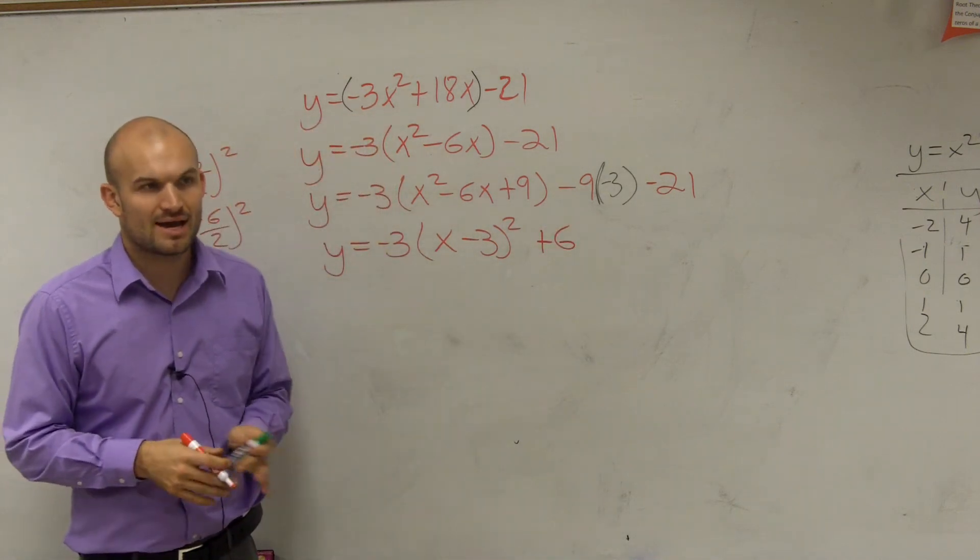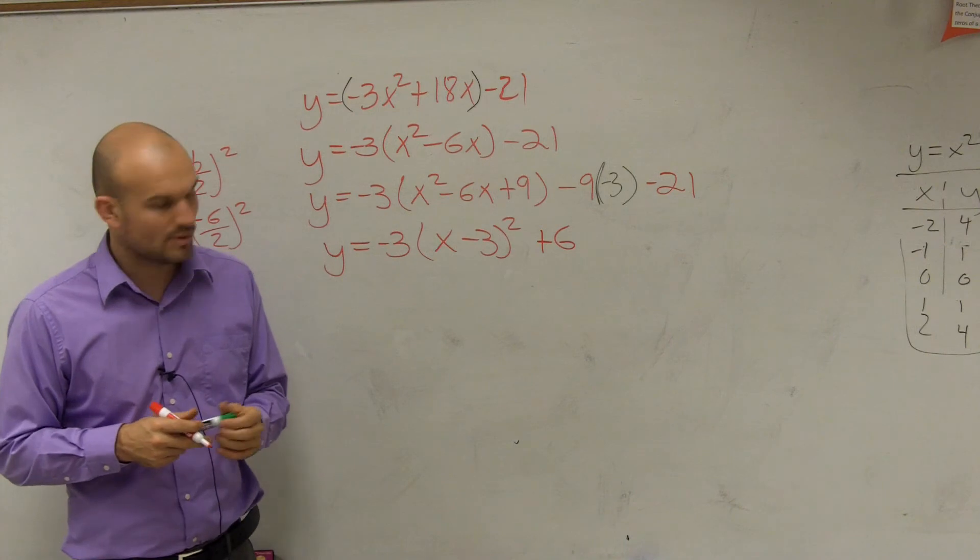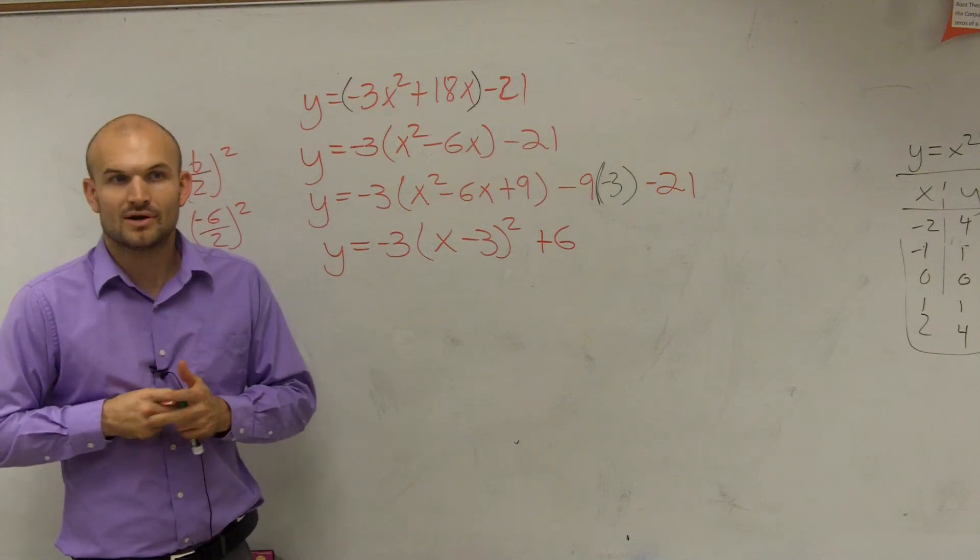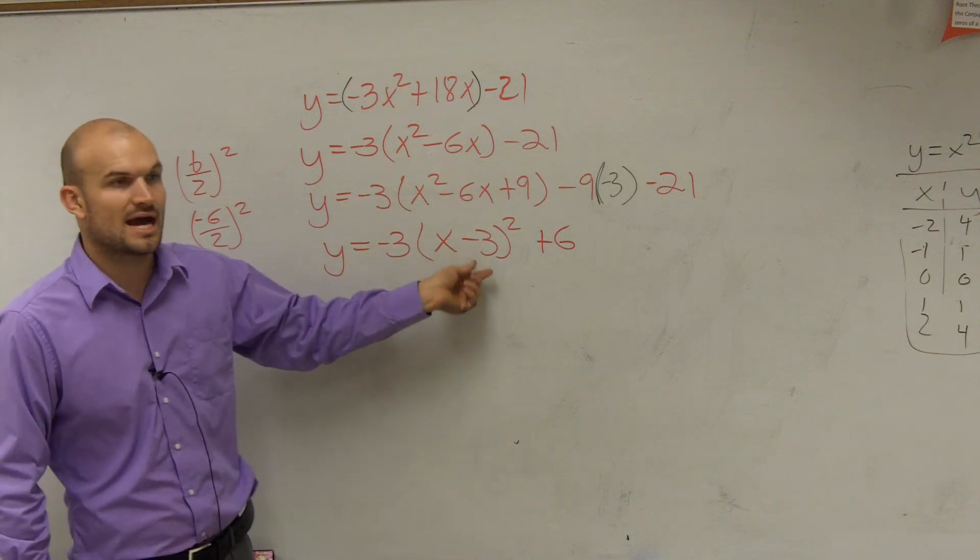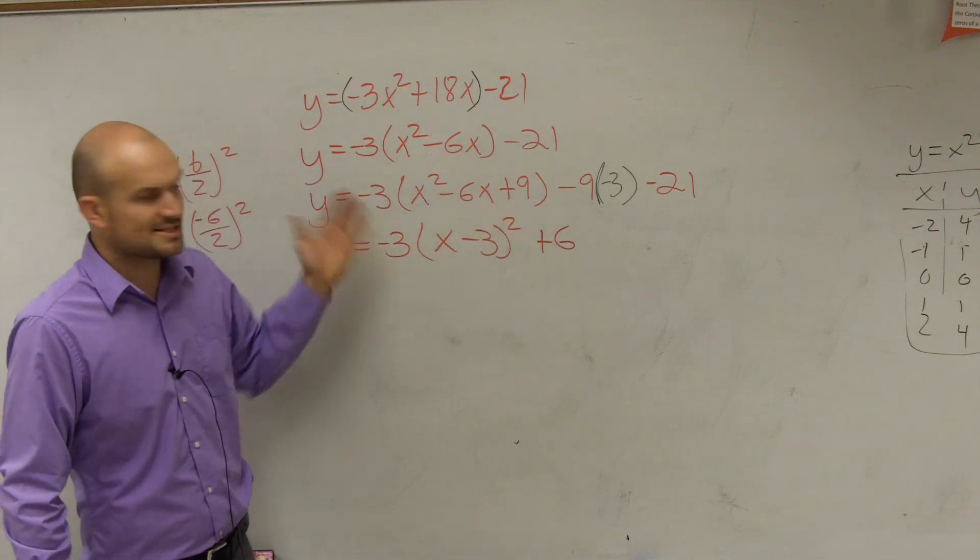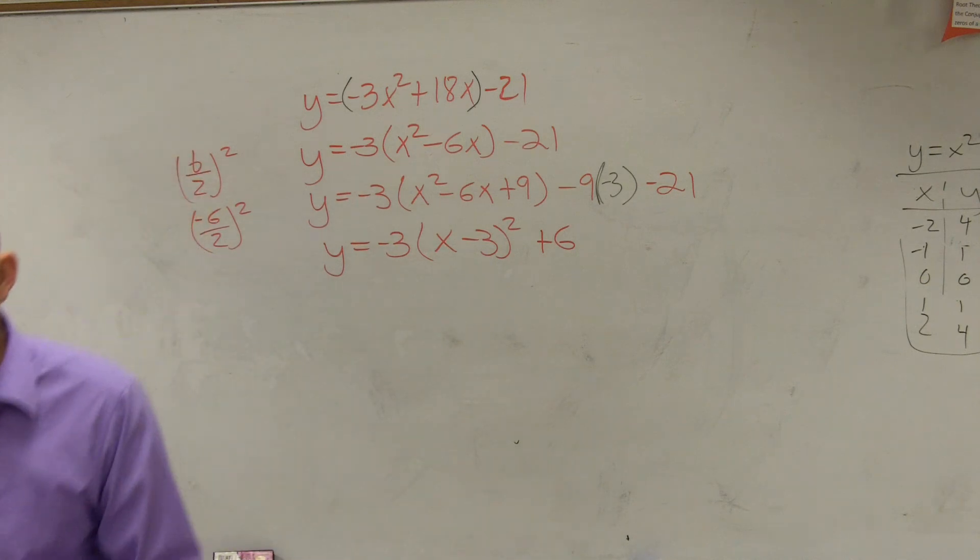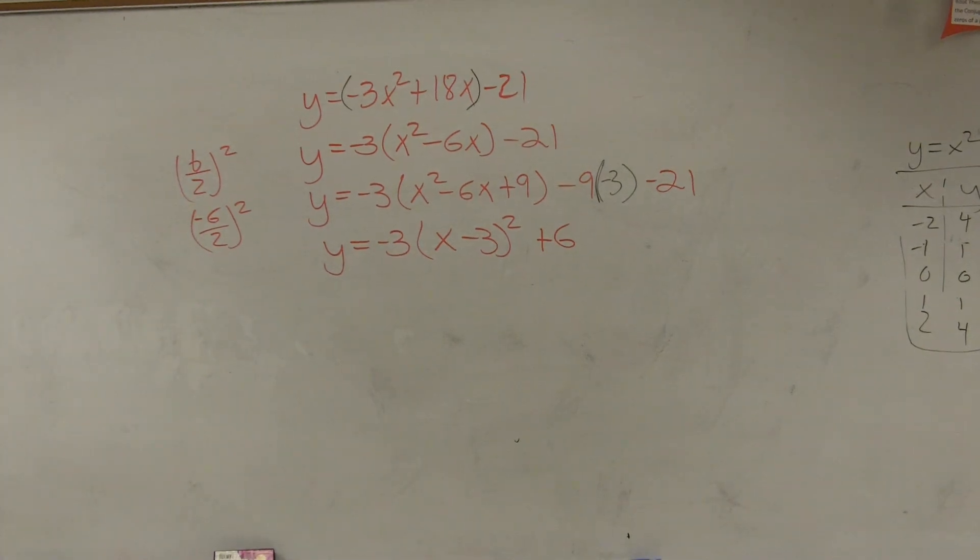And then we now have an equation in vertex form. Cool? And you guys can notice the vertex now is at 3 comma 6. It's going to reflect over the x-axis and it's going to be horizontally compressed. Okay. I have talked way too much about the vertex.